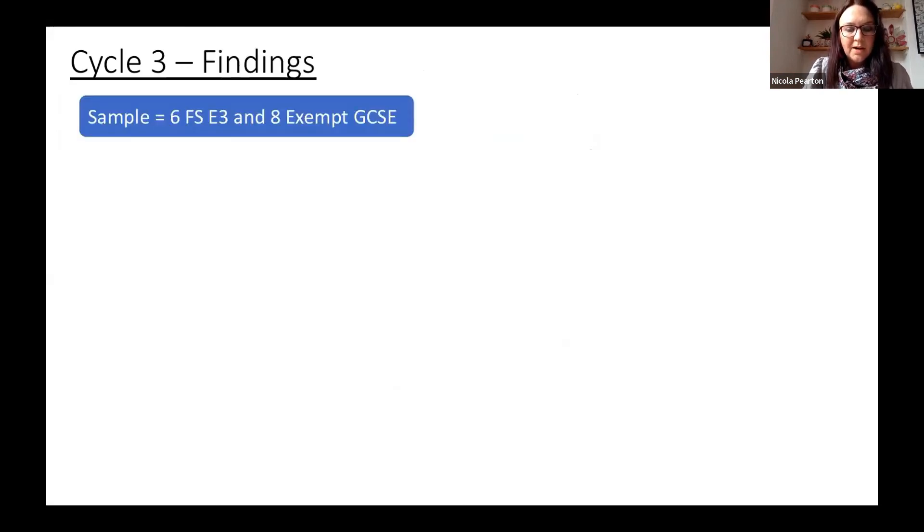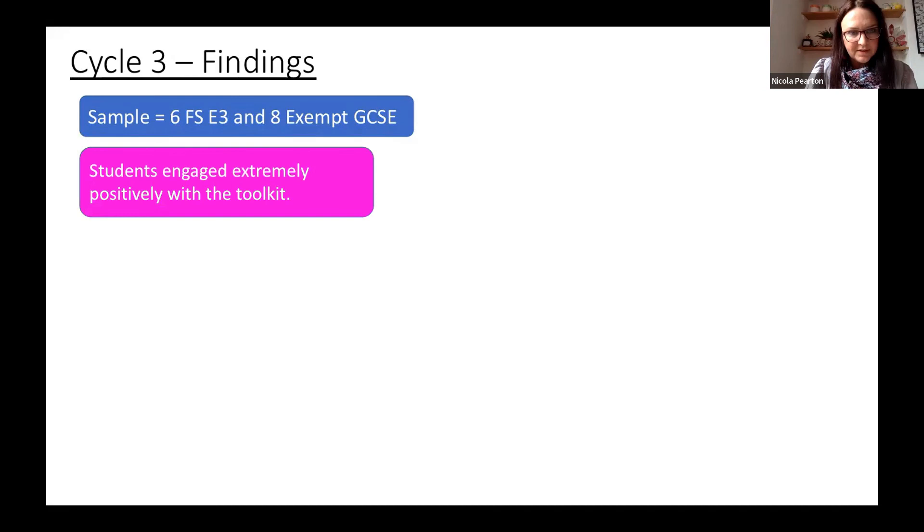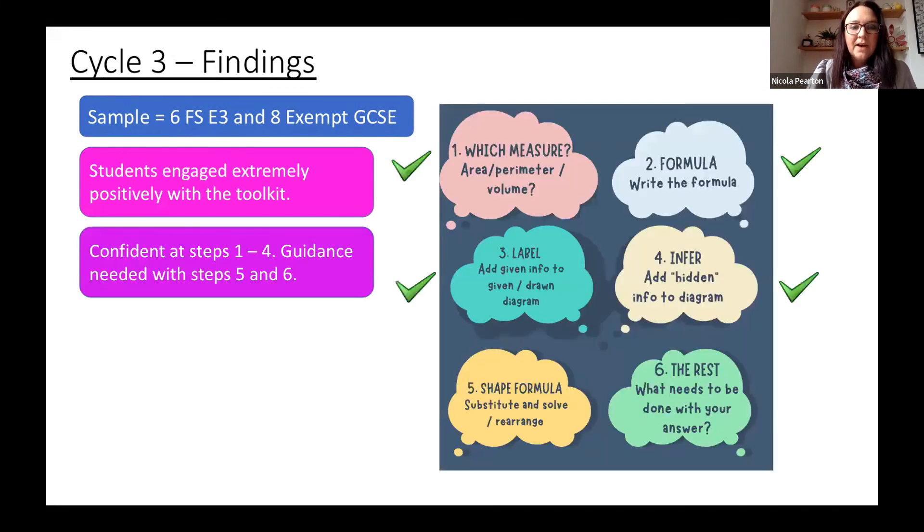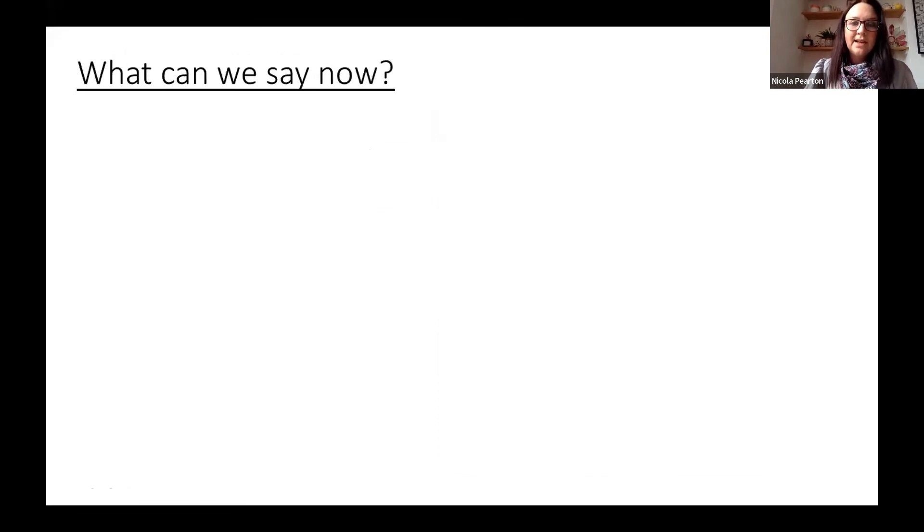Just some quick findings from Cycle 3: Due to the time of year and the advanced information from the exam boards, GCSE students were very much focused on going over those topic lists. We tested this version of the toolkit on six functional skills students who had passed Entry 3, and then separately on eight GCSE students who were exempt. What was really interesting was that they engaged really positively, especially the functional skills students. In terms of the flow chart, they loved it. They did really well—almost even better, I would say, than the GCSE students that I'd worked with before. We found that, unsurprisingly, probably because there's a lot of this sort of stuff in functional skills, they were able to do the first four steps really well and then needed some help with the algebra at the end, which is completely understandable.